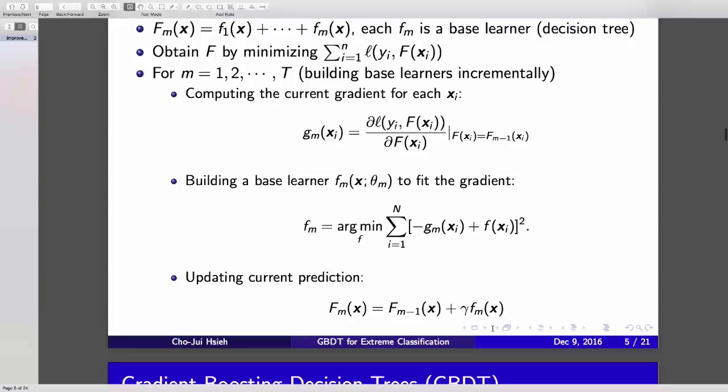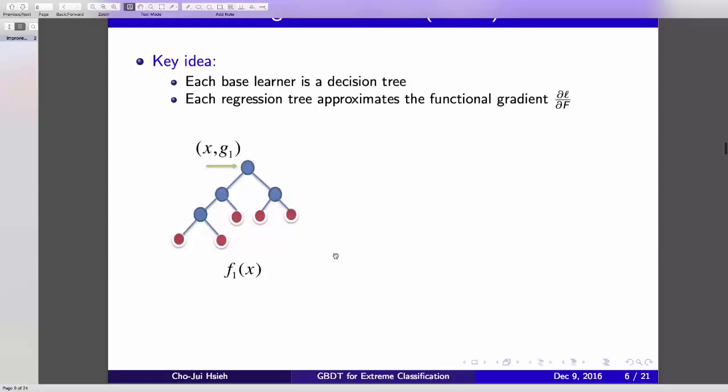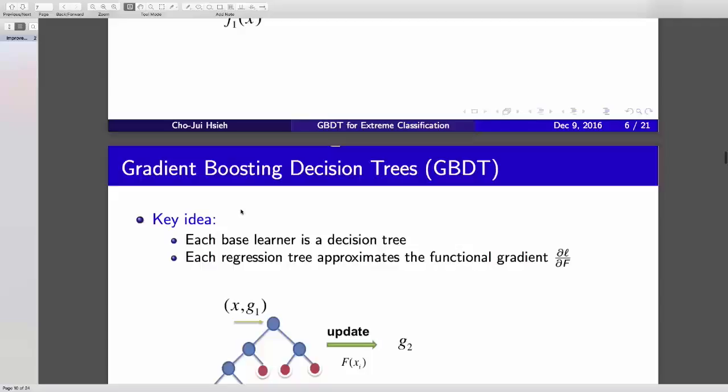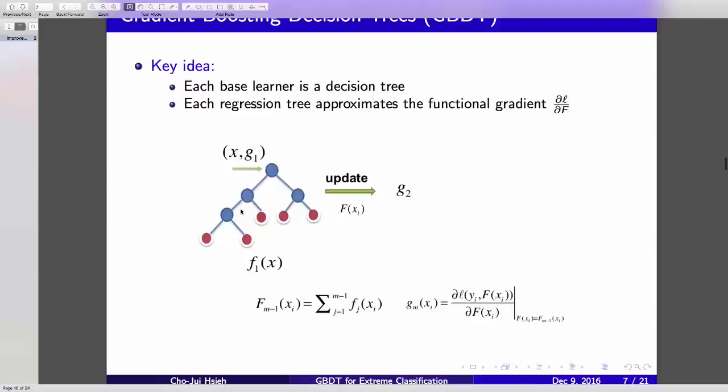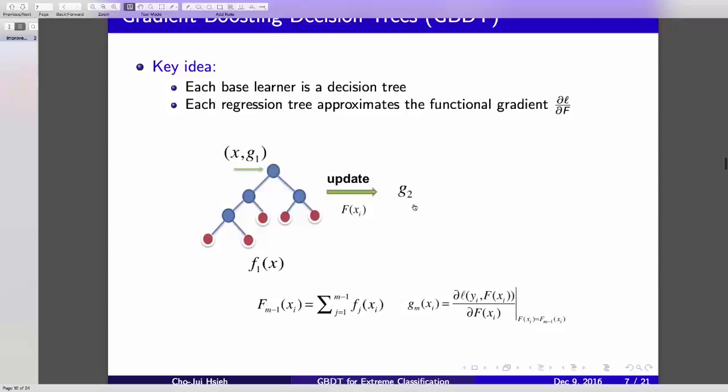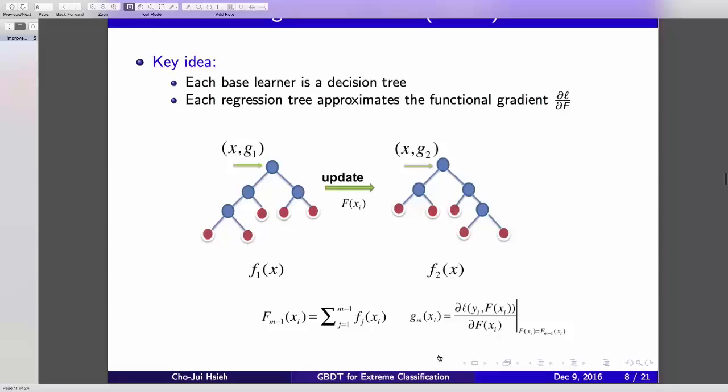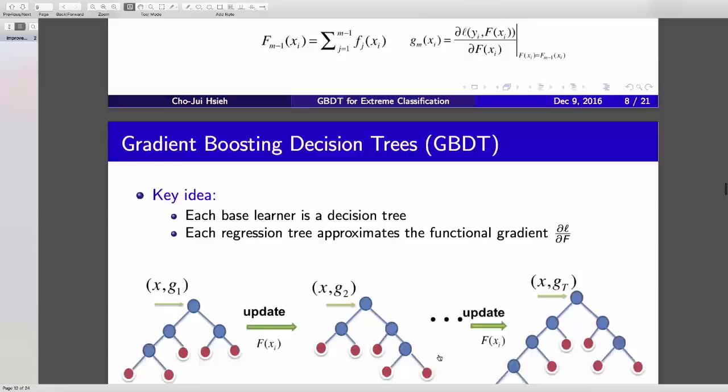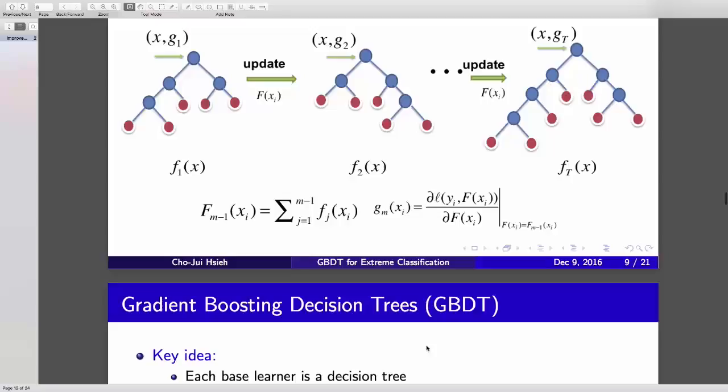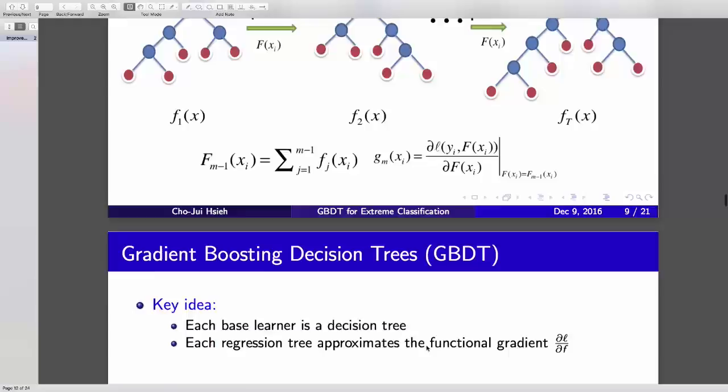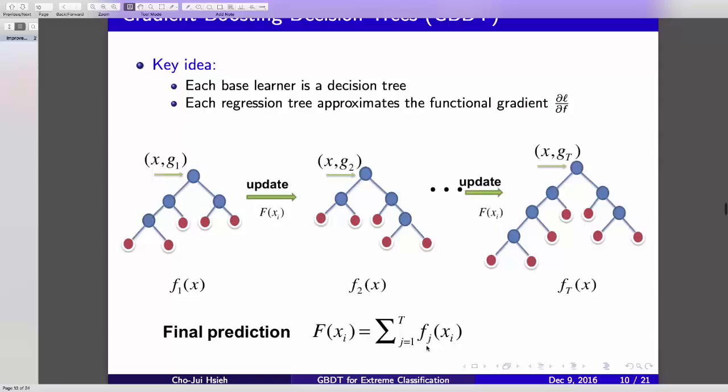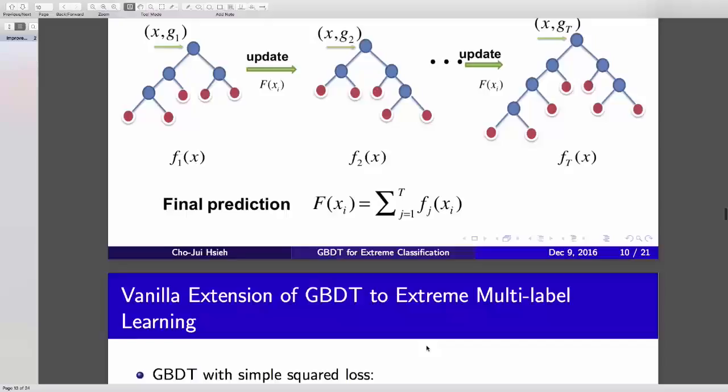The picture is like this. Initially, you don't have any model, so you just build a tree to fit the label vectors y. Next iteration, you compute the current gradient based on the first tree, and then you build a second tree to fit the gradient. Then you update your model and build another tree. So you build a tree incrementally. Each one tries to capture more information which is not captured in the previous one. Intuitively, because you are doing this sequential process, it will be better than the random forest approach.